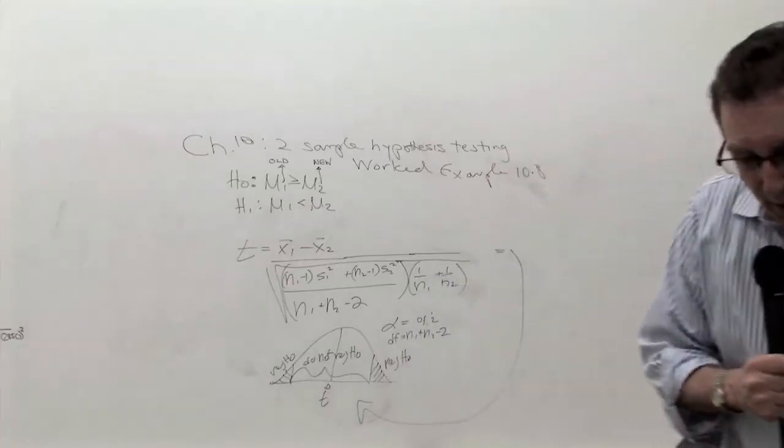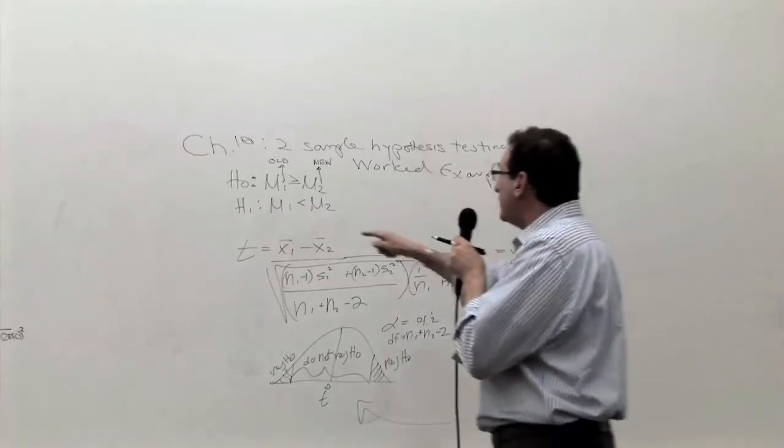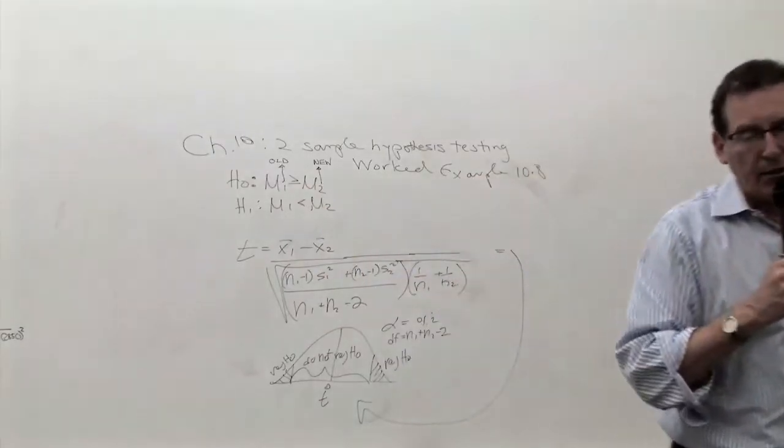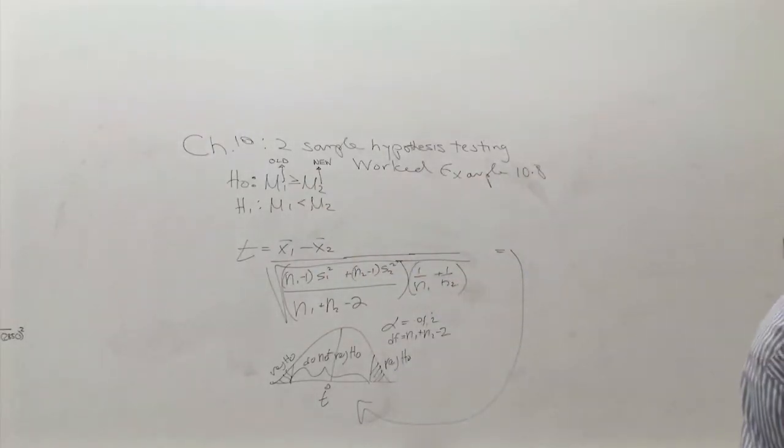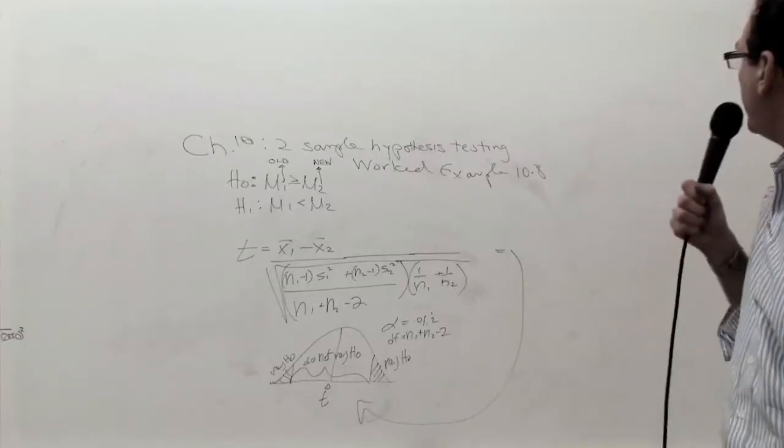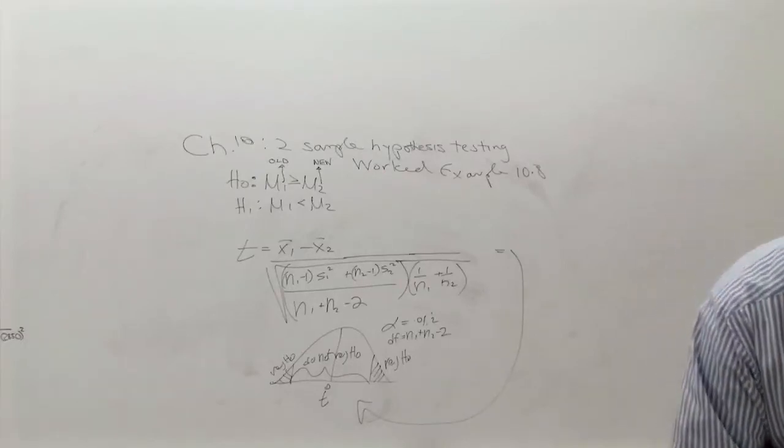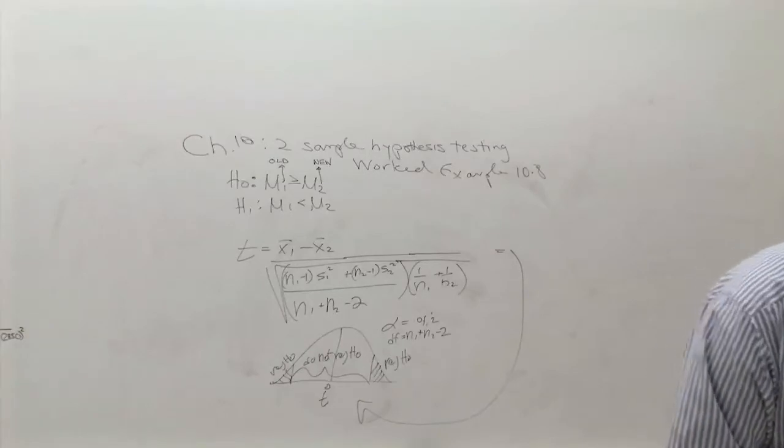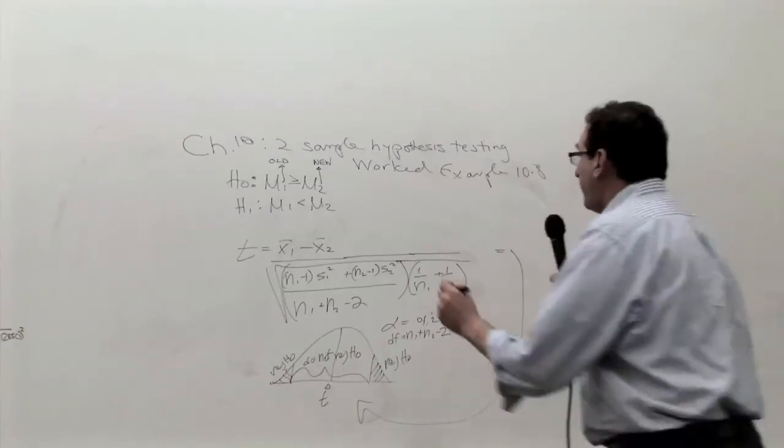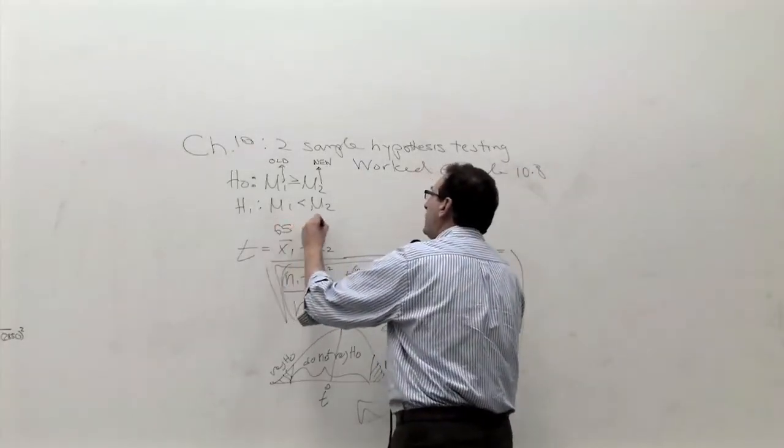Now what is x̄1? Well, we just identified one to represent the old machine. You've got to be consistent. So x̄1 is going to be, the average here is 65. So it'll be 65 here. The other average was 72.